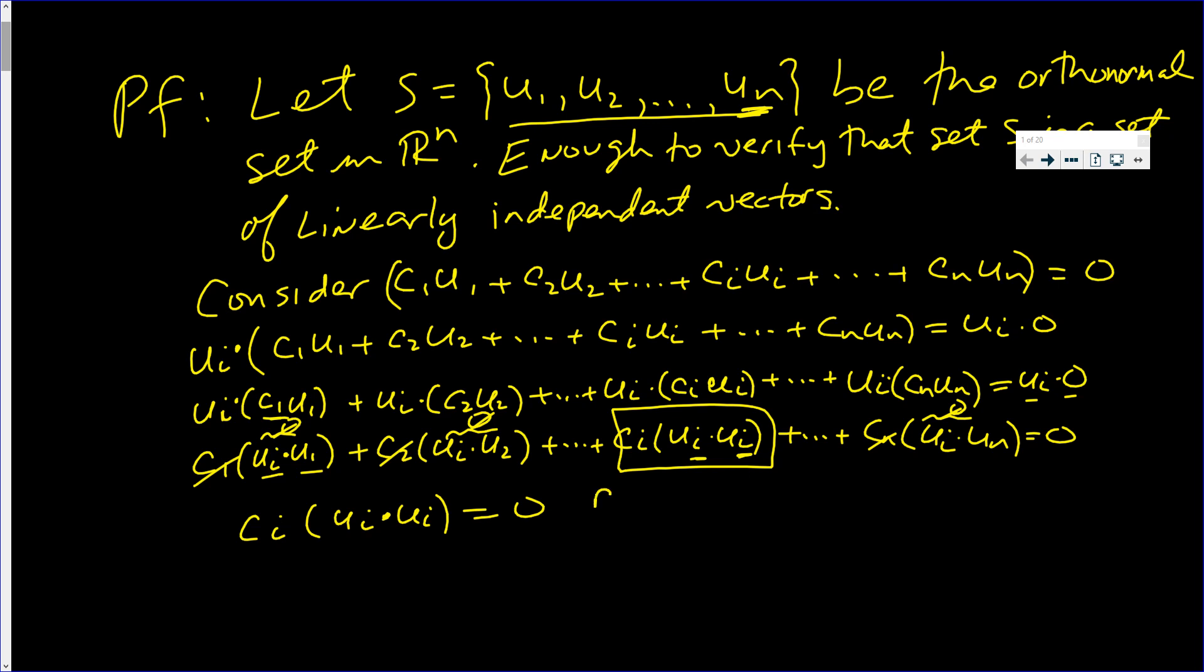This statement is for each i equal 1, 2, all the way up to n. i was arbitrary, but between 1 and n. Now, here's the thing. The only way you dot a vector with itself and you get zero is if and only if the vector is zero. This vector is not zero. I know that because its length is one.